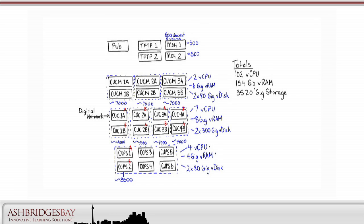Now we'll do the same thing for the CUPS servers. The CUPS cluster only has one publisher, CUPS1, but we'll use the same scheme as for connection anyway. We'll put the pub on chassis B to balance the publishers across the chassis. We'll put the TFTP and music on hold servers on different chassis, and the same for the CUCM call processing servers in each redundancy group.